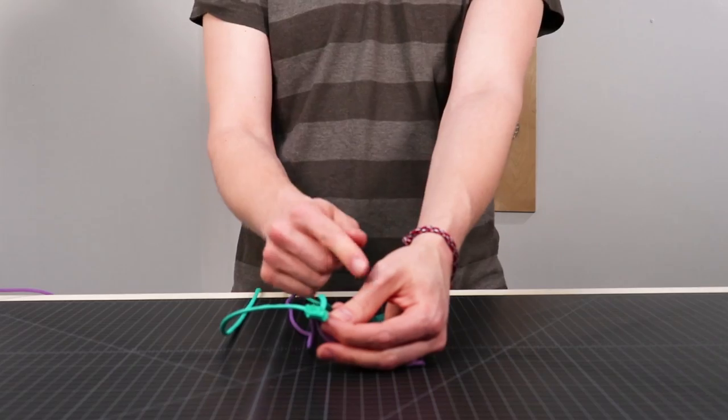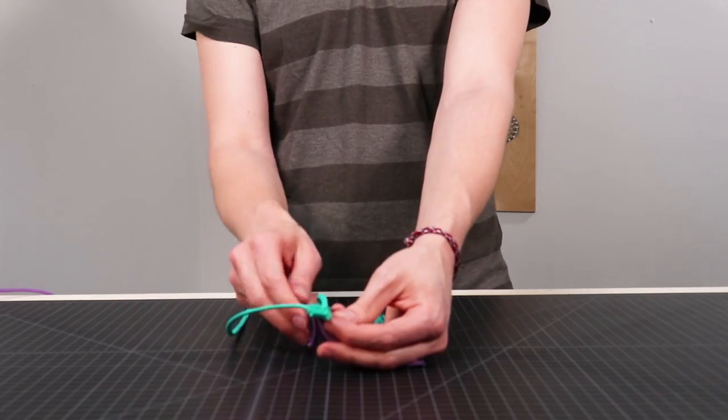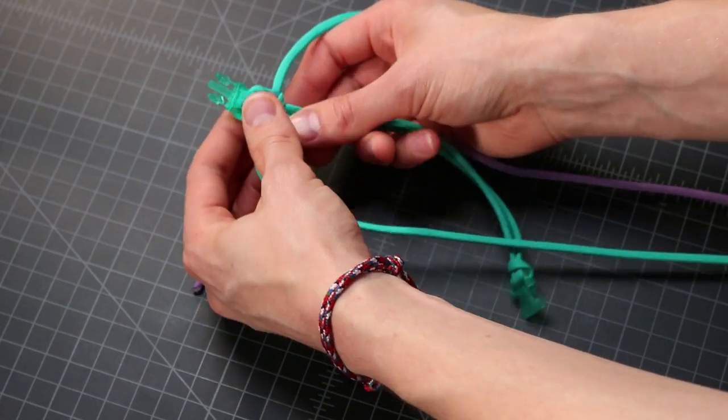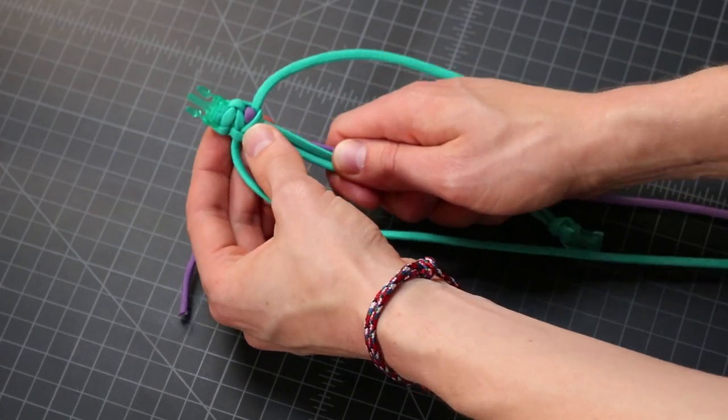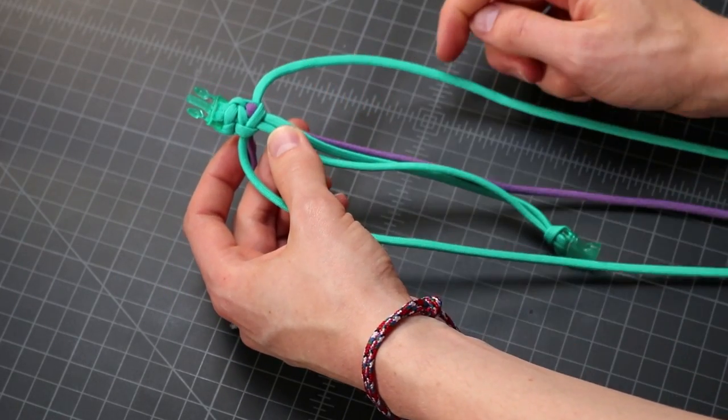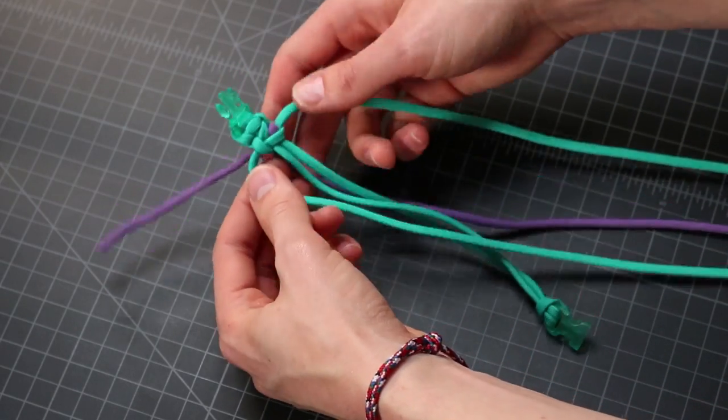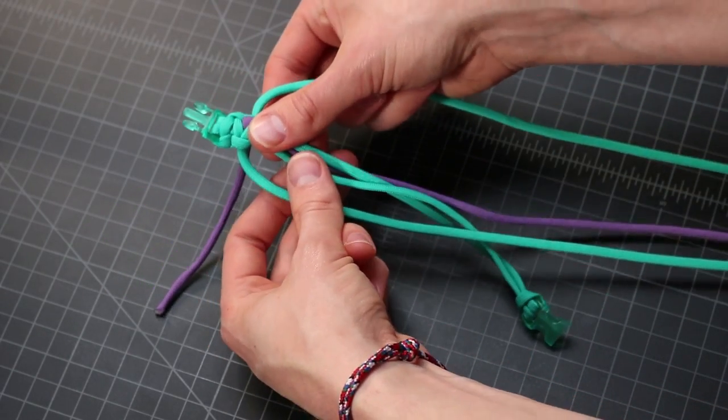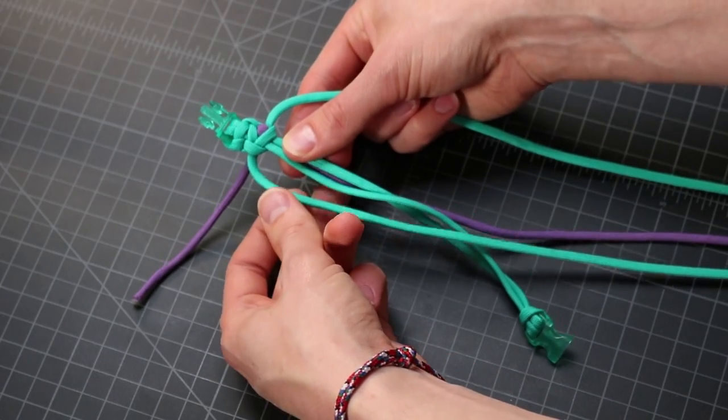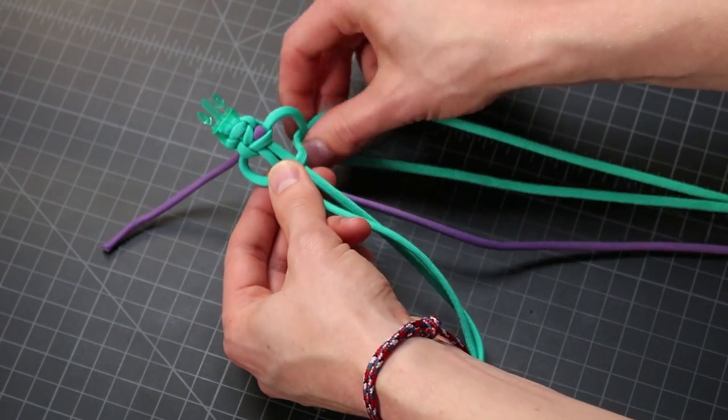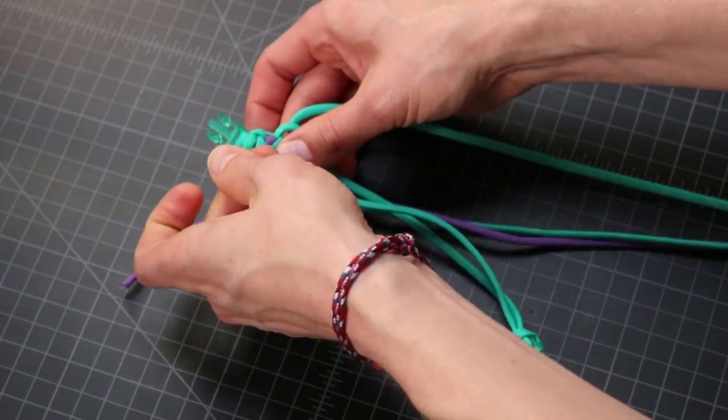So for the normal Solomon's Dragon, you would alternate every side, but we're going to hide that cord for a couple steps, and then bring it back up a couple knots down the line. So to keep going, just put that lilac cord right alongside your core strands, because you don't want that to be showing. And continue your Cobra Weave, switching each time.